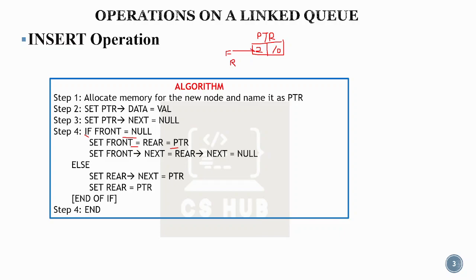If we talk about an empty queue where front equals null, we set front equal to rear equal to pointer. Then set front equal to rear equal to pointer, and next equal to rear next equal to null. This handles the case where the next node pointer is null.